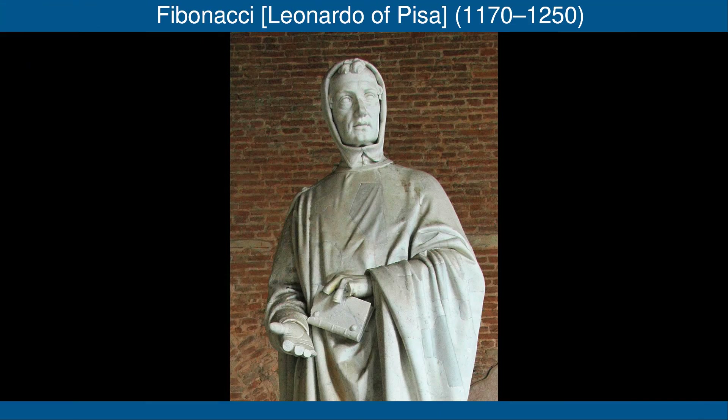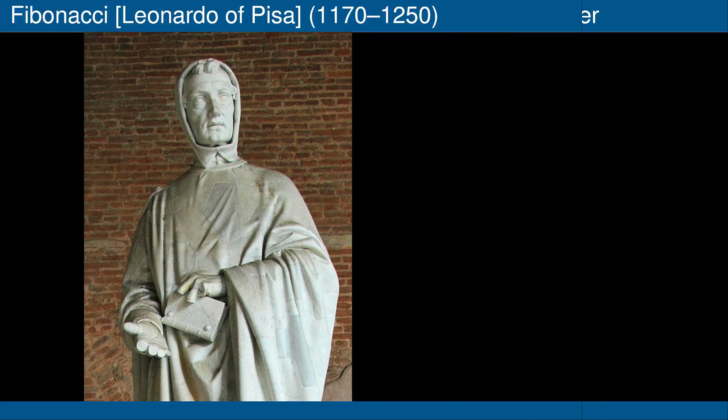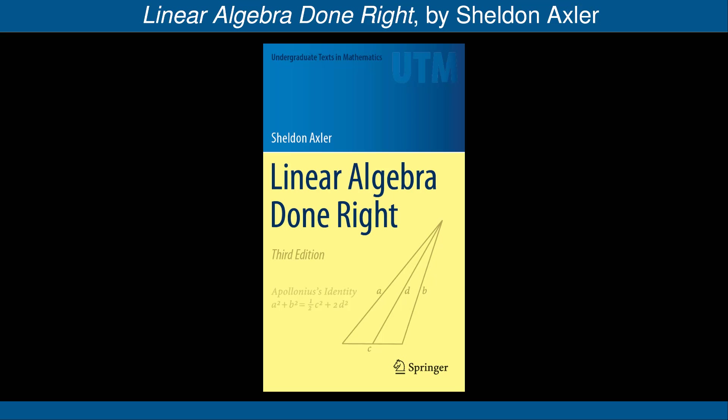To show the power of diagonalizability, be sure to look at the exercise in the book at the end of this section on the Fibonacci sequence. This exercise shows how finding a basis with respect to which a certain operator has a diagonal matrix leads to an explicit and interesting formula for the Fibonacci sequence. This slide shows a picture of a statue of Fibonacci, also known as Leonardo of Pisa — the dates given for his birth and death are just approximations. This concludes the video on eigenspaces and diagonal matrices.